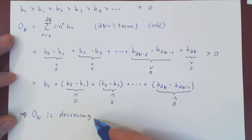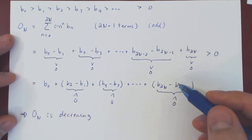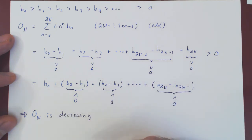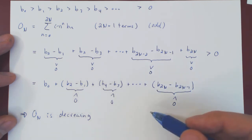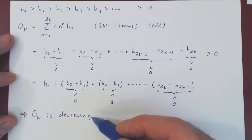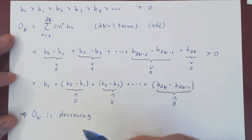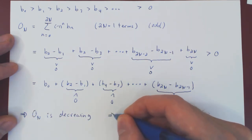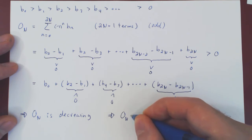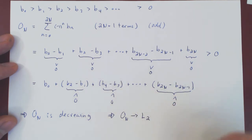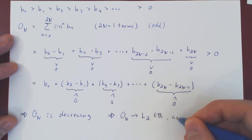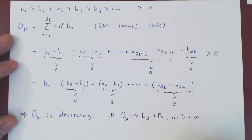We now have a decreasing sequence bounded below by 0. The terms are getting smaller and smaller but never go below 0, so they always stay positive. At some point, as ON keeps shrinking, it will hit a wall and converge. By the monotone convergence theorem, ON must converge to a real number, say L2, as N approaches infinity.